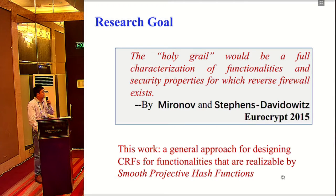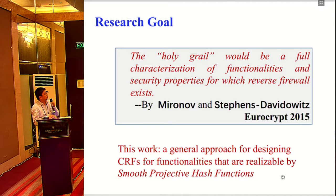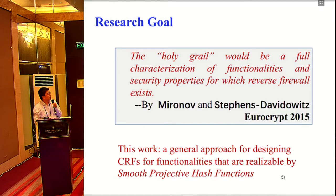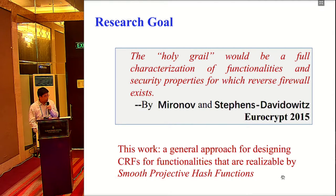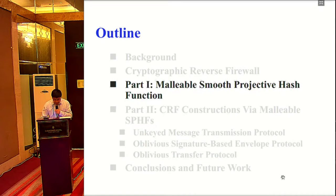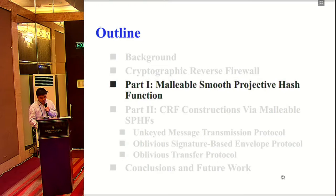That's the background about crypto reverse firewalls. In EuroCrypt 2015, where the notion was proposed, there is a question: we want to find a full categorization of functionalities and security properties for which crypto reverse firewalls exist. In this work, we try to partially answer this question. We build a generic approach for designing crypto reverse firewalls for functionalities that are realizable by smooth projective hash functions — a very useful primitive for privacy or confidentiality-related functionalities. This is one of the major contributions of this work: we introduce a new notion called the malleable smooth projective hash.